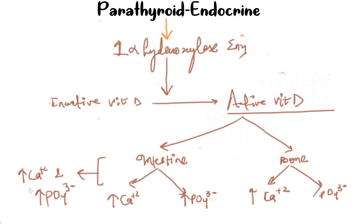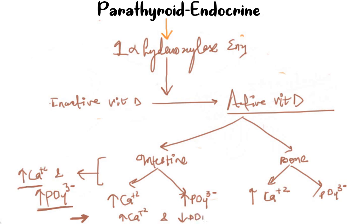The net result due to vitamin D would be an increase in both calcium and phosphate. However, PTH increases the dumping of phosphate into the urine, so the net result is an increase in calcium due to both PTH and vitamin D, and a decrease in phosphate.